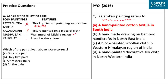The fourth option, Kalighat painting, describes the use of watercolors — this is correct, as Kalighat paintings are done at the Kalighat Kali temple in Calcutta, depicting everyday life using watercolors. So the correct answer is option B — only two pairs are correct, that is Madhubani and Kalighat.